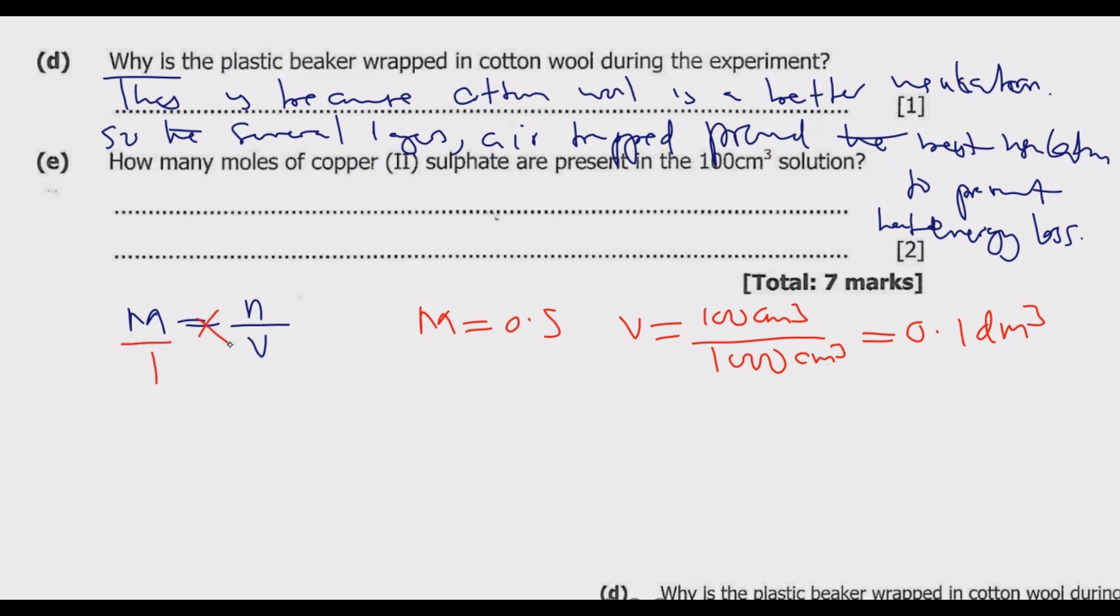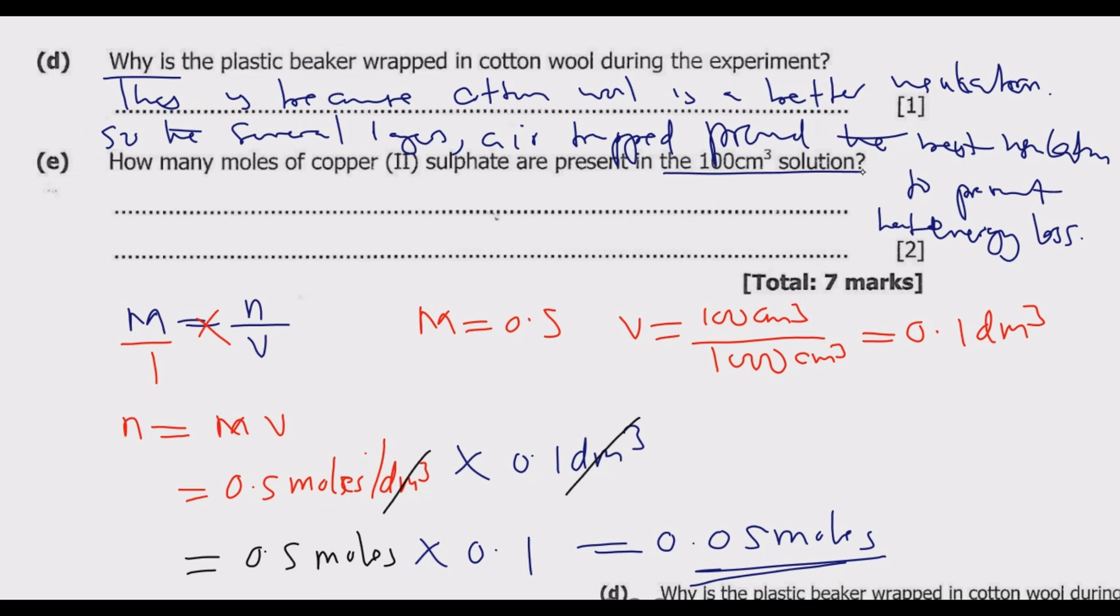We cross multiply: n = MV. M is 0.5 mol/dm³ (that's what molarity means), then we multiply by the volume, which is 0.1 dm³. The dm³ cancels, and we get 0.05 moles. This is the number of moles present in the 100 cm³ solution of copper sulfate.